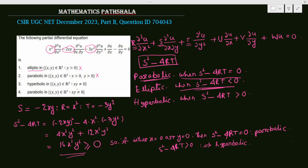Option 3 says hyperbolic when x, y ≠ 0. We see that if either x = 0 or y = 0 the equation is parabolic, and otherwise — when x, y ≠ 0 — it is hyperbolic. So option 3 is true. Option 4 says parabolic when x, y ≠ 0, but we already established that when x, y ≠ 0 the discriminant is positive, making it hyperbolic, not parabolic. Option 4 is false. Therefore, option 3 is the only correct answer, and this is a Part B question.